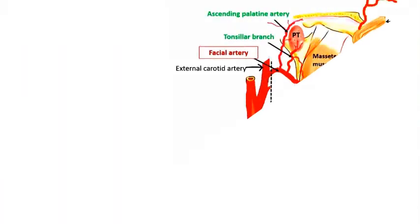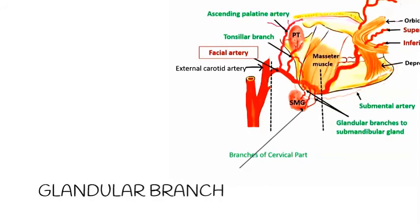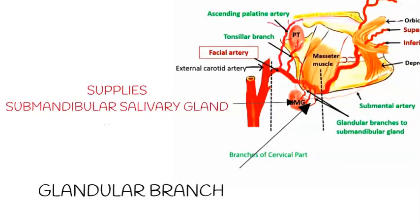The glandular branches are three to four large branches that supply the submandibular salivary gland, as well as some nearby structures including the lymph nodes.